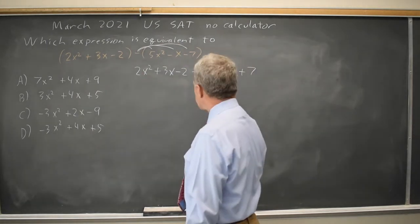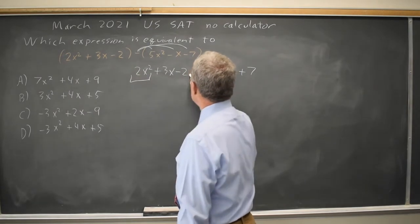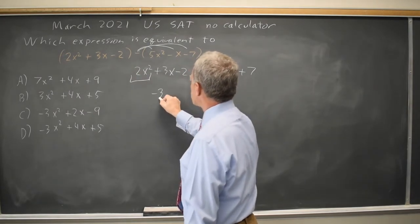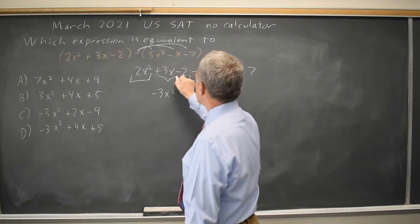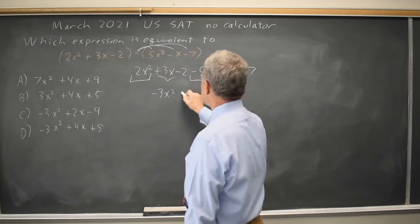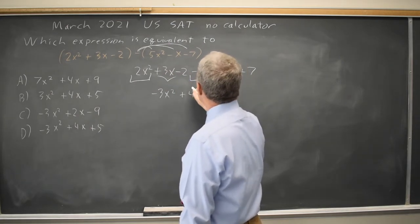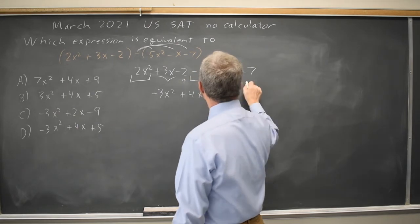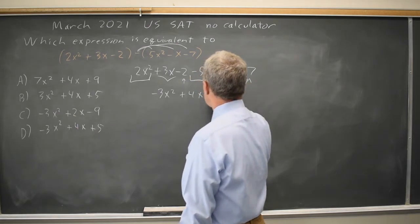Next I collect like terms. 2x squared minus 5x squared is negative 3x squared. 3x plus x is positive 4x, and negative 2 plus 7 is positive 5.